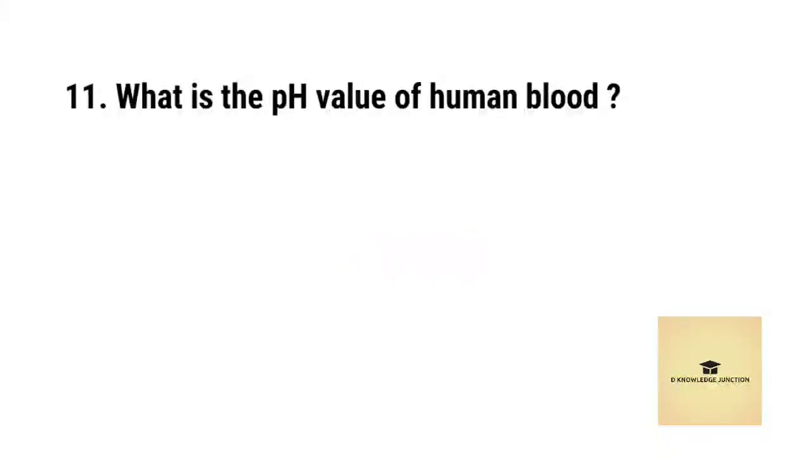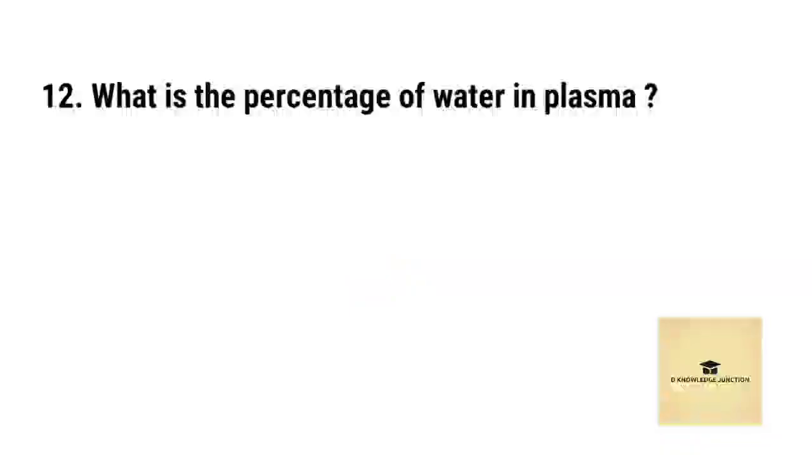What is the pH value of human blood? Right answer is 7.4. What is the percentage of water in plasma? Right answer is approximately 90%.